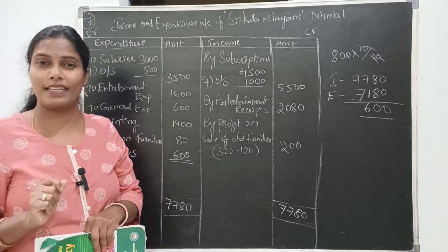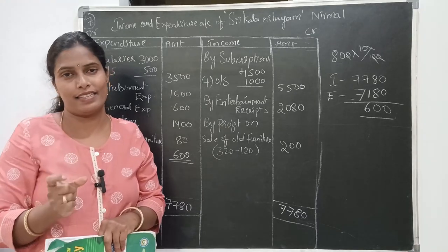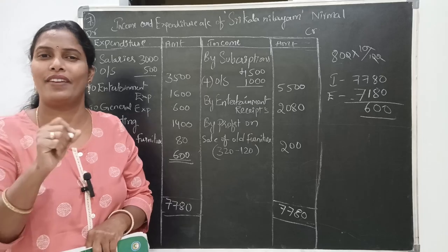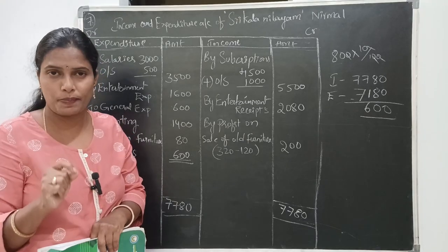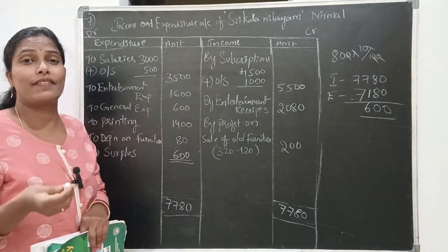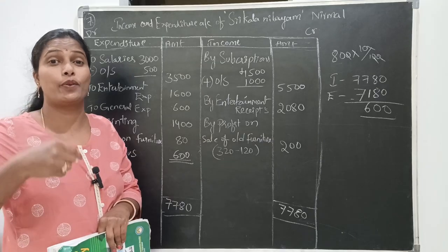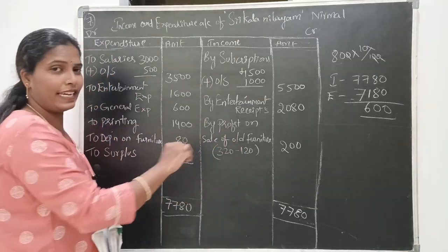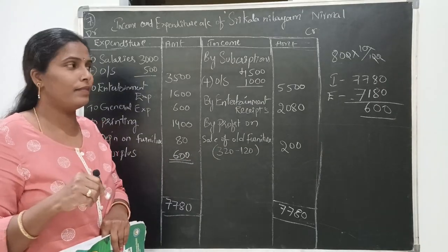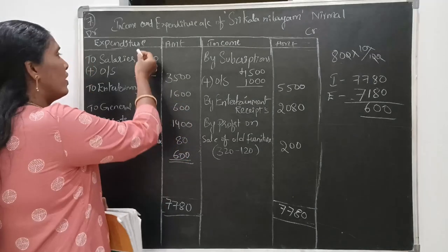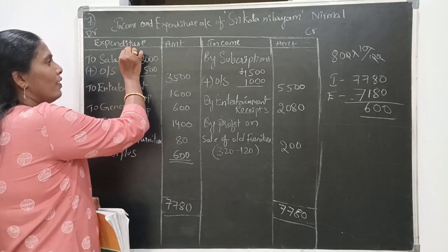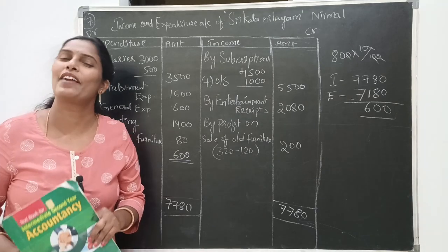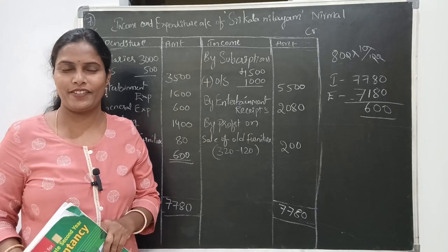Remember the important points. First, only current year transactions we are going to post — previous year and next year transactions we simply deduct. Second, only revenue expenses and incomes we consider in this account. Third, according to the nominal account rule: debit all expenses and losses, credit all incomes and gains. Remember these three things and it is very easy to solve the problem. I hope you like this video — subscribe to my channel for more videos. Thank you.